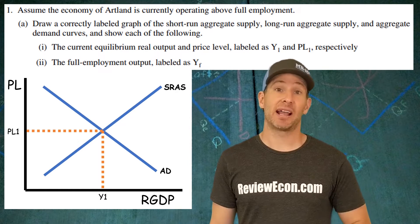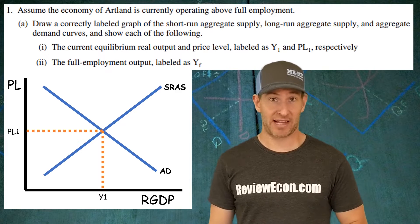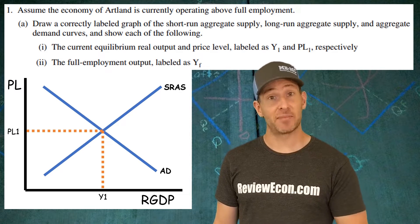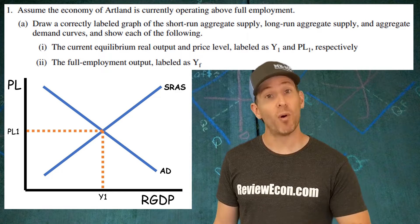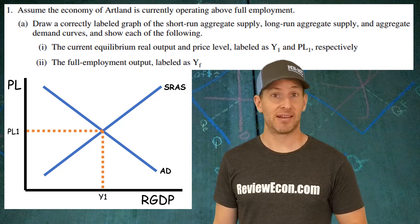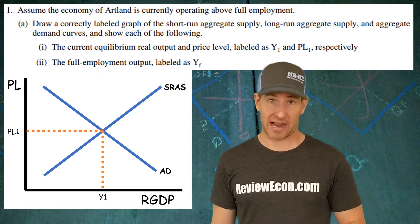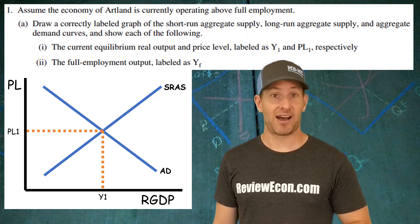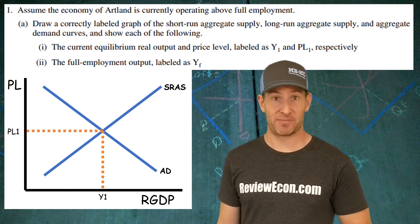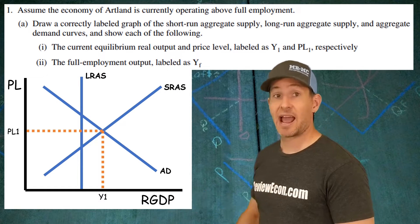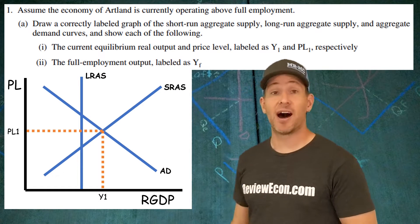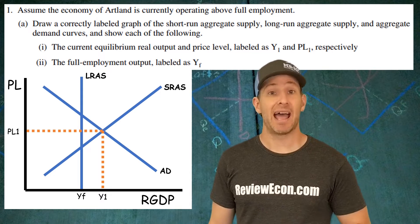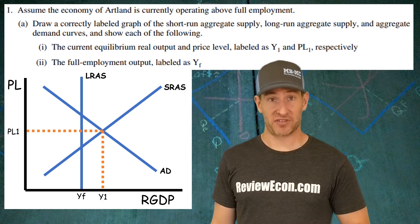Now we need to draw in a long-run aggregate supply curve, but before we do that we need to keep in mind that the economy is currently producing more than the full employment output. That means the long-run aggregate supply curve should be to the left of the current equilibrium output. Draw that in and label the output underneath that long-run aggregate supply curve as YF. And you've got your points for this part.